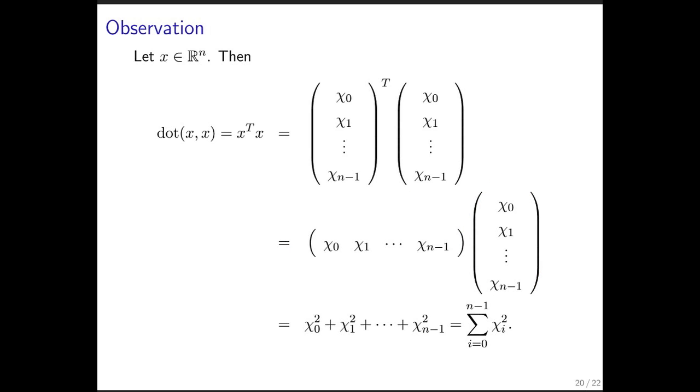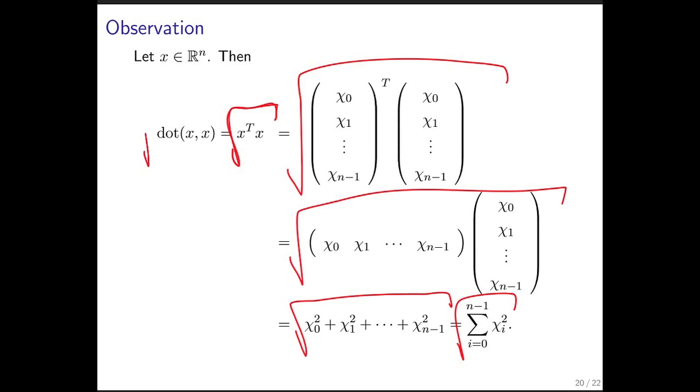Notice that the length was computed by taking the sum of the squares of the components and then the square root. This means we should take the square root of every quantity we see here to keep the equality going.